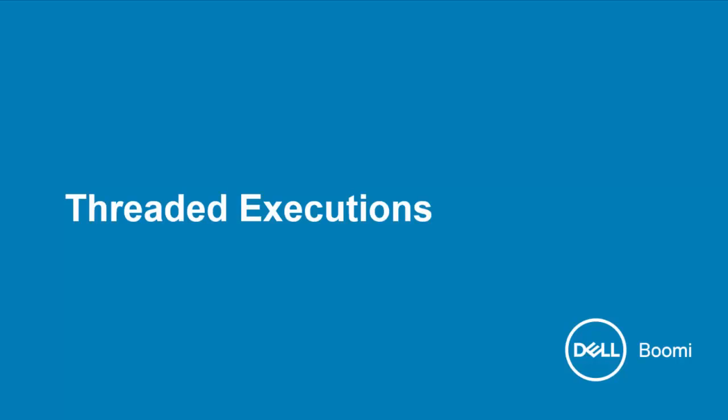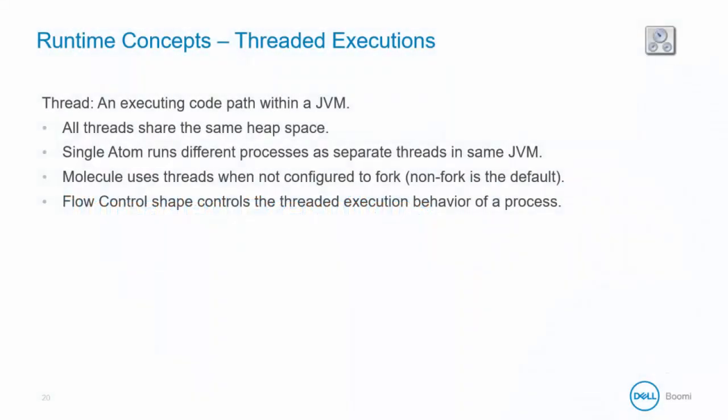Let's take a look at threaded executions. A thread is an executing code path within a JVM. Your JVM is doing many jobs at one time — executing the process, communicating with the platform, and maintaining health. All of these jobs are handled on different threads, all sharing the same heap space. By default, allocated memory is 512 megabytes. A single atom runs different processes as separate threads in the same JVM.